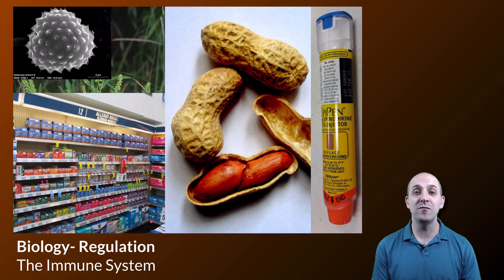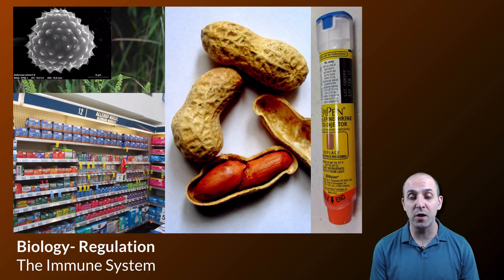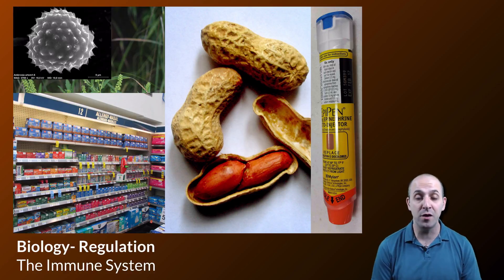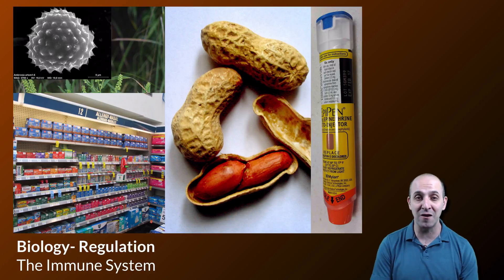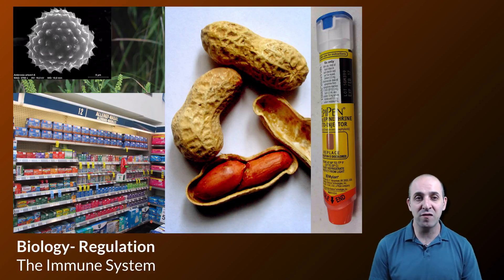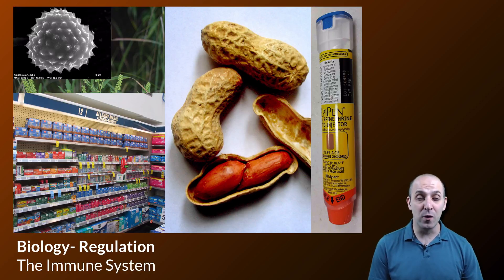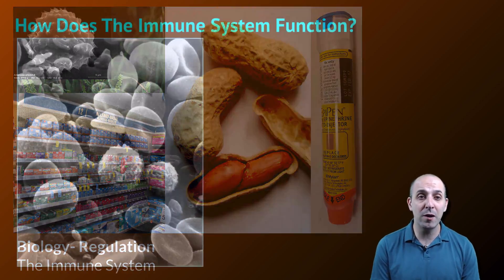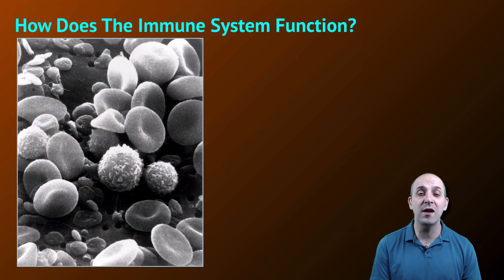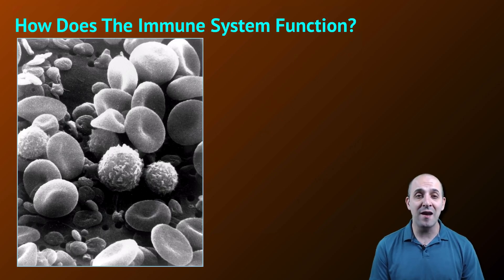As a result, peanut allergies that are very severe have to be treated with an injection of epinephrine, a hormone that causes a reversal of the kinds of things that are happening in the system. I make this point only because the immune system is really, really powerful and really, really important in what it does. And when it goes wrong, that can be a really big problem. We're going to talk a little bit about that in this video, but we're really going to focus on the functioning of the immune system and how it works.